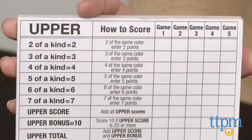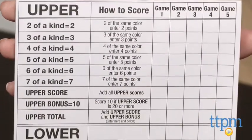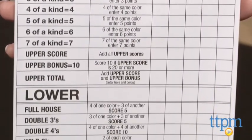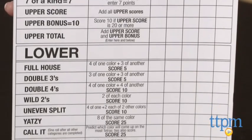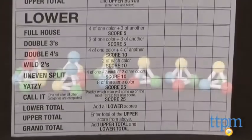Keep any tetras you want to save and roll up to two more times to try and create one of twelve color combinations, from two of a kind to an uneven split, which is four of one color and two each of two other colors.